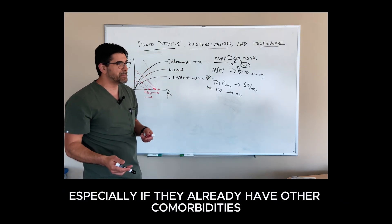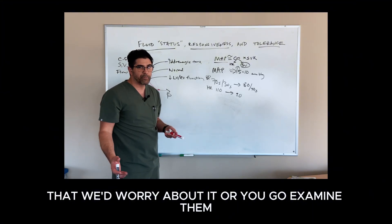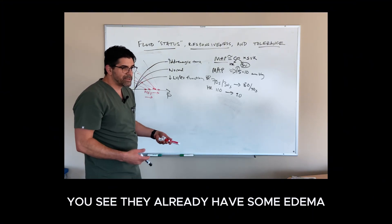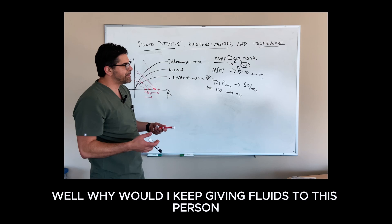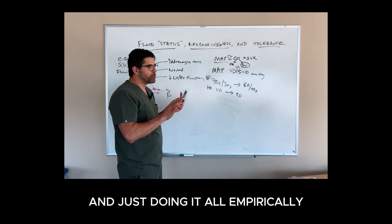You would probably infer, and probably rightly, that if the MAP is increased in response to this fluid bolus, that means the stroke volume has probably improved, which has caused my heart rate to come down and my blood pressure to come up. That is one of the simplest ways to do this, but we don't want to give a bunch of people fluids, especially if they already have other comorbidities that we'd worry about it, or you examine them, you see they already have some edema. You'd say, well, why would I keep giving fluids to this person and just doing it all empirically?